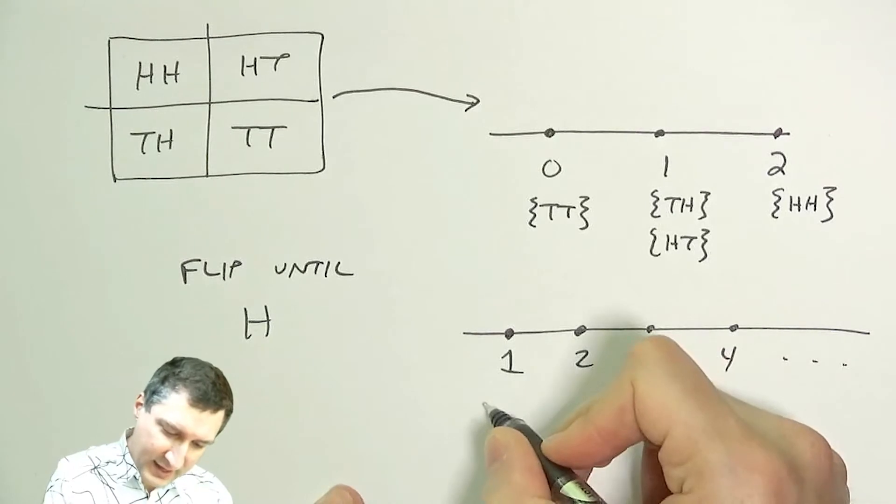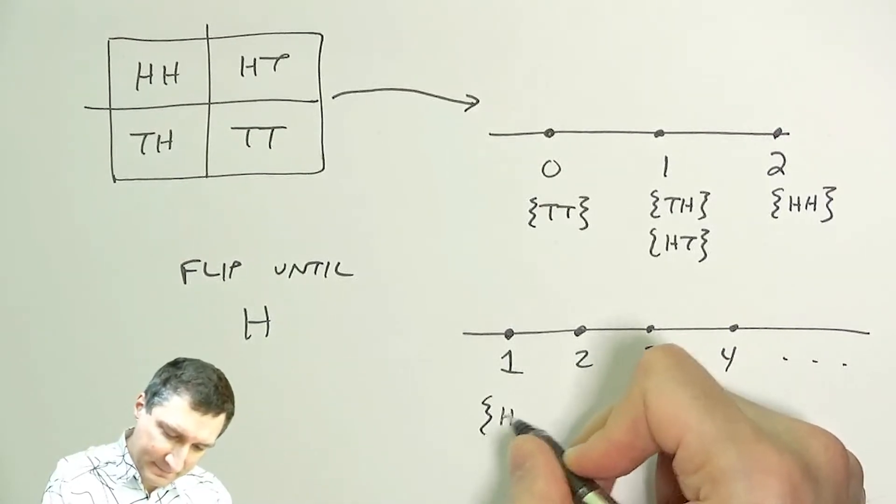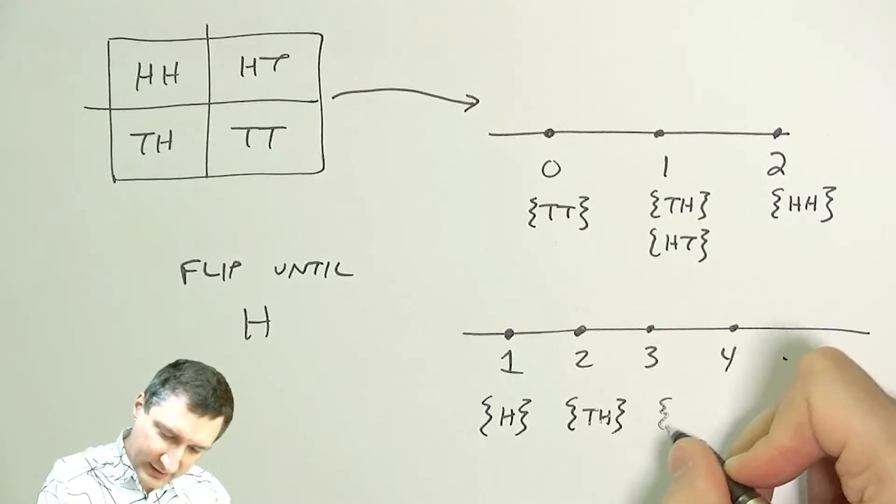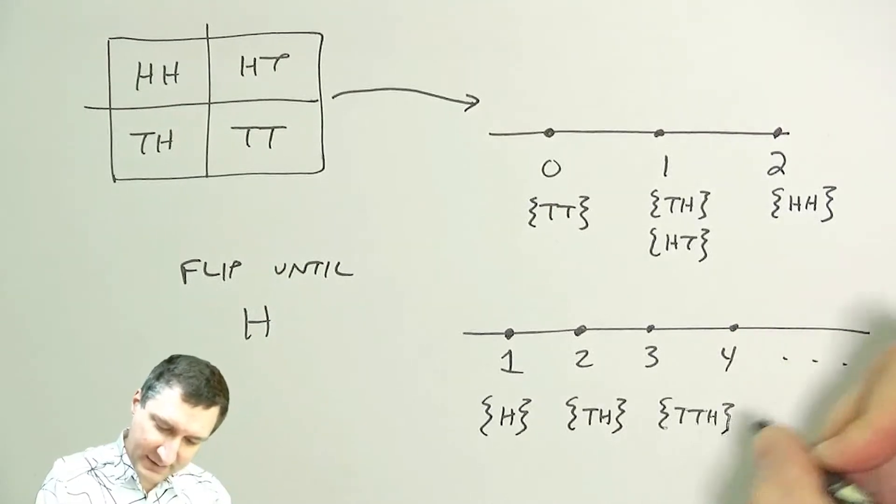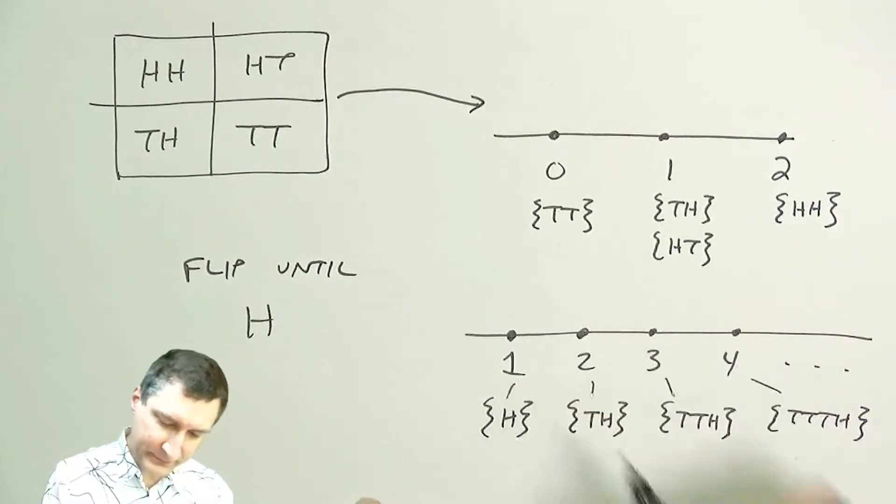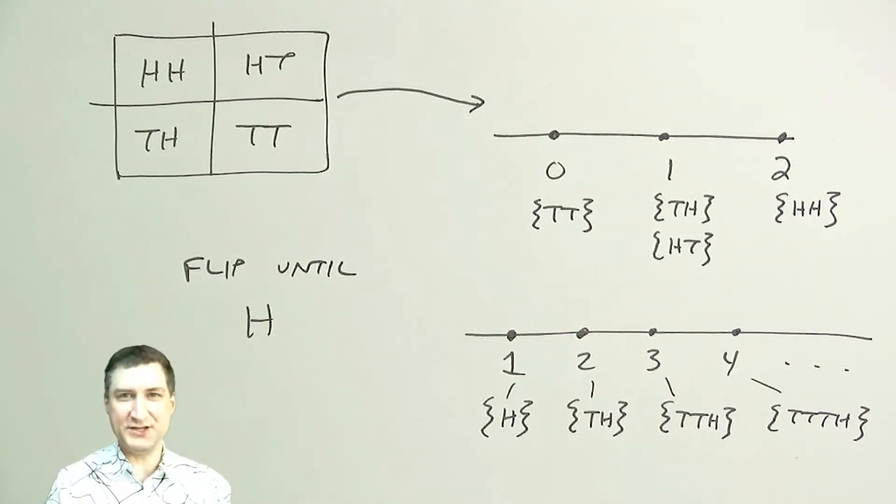And each of these flips corresponds to an underlying, perhaps symbolic, outcome from the sample space. And it's going to be much easier to deal with numbers 1, 2, 3, 4 than it is to deal with these patterns.